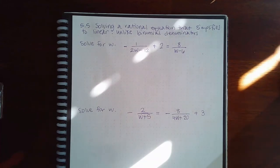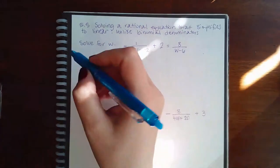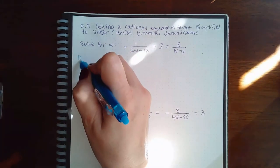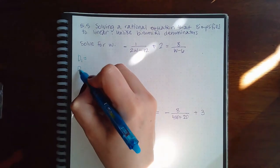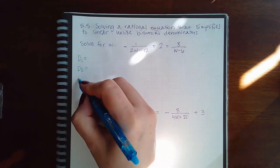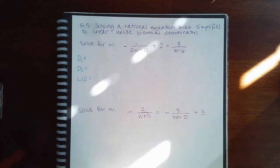Here we have solving a rational equation that simplifies to linear unlike binomial denominators. So we have to find the LCD, but we have to be careful when we're finding the LCD because our denominators have to be in their factored forms in order for us to determine the LCD.